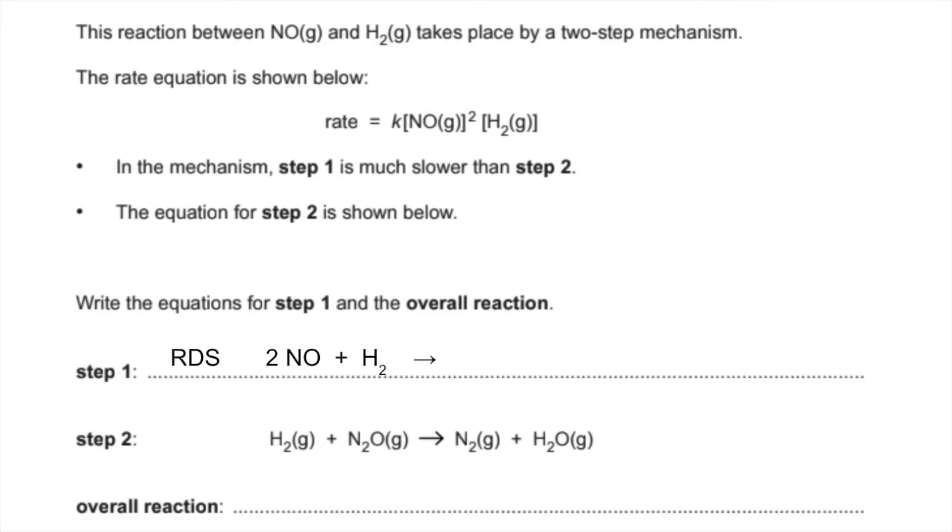For this one the wording is really key. The reaction between NO and H2 takes place by that two step mechanism. So we don't want N2O in there as well as a reactant and you can see they've put it in as a reactant of step two so we need to get rid of that.